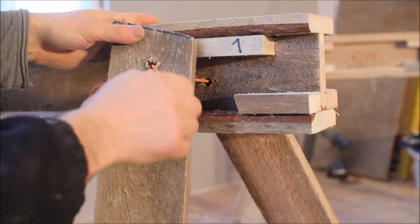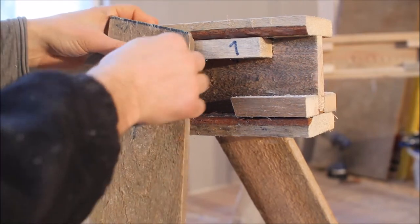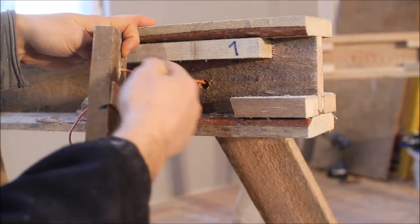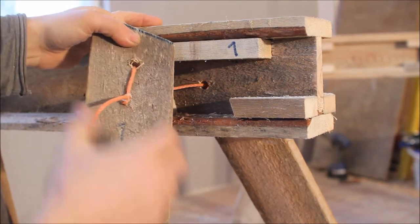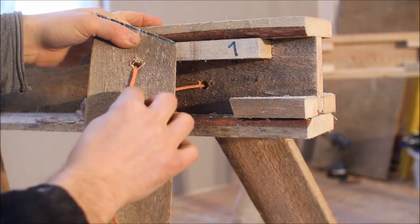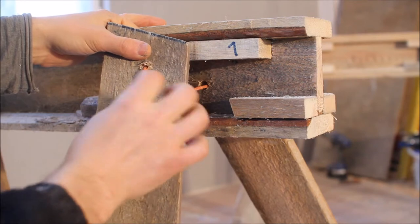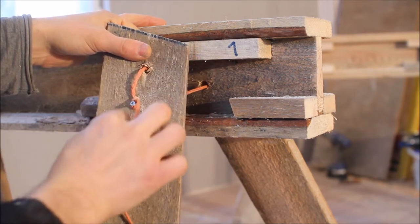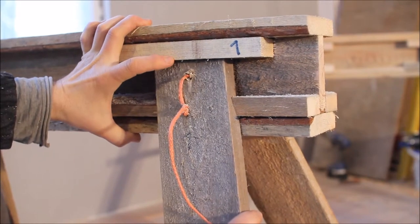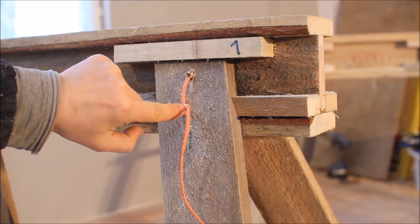And then there's this string or rope and it goes through the saddle and the legs. And I put a screw there. I can adjust the length of this string just by moving the screw.